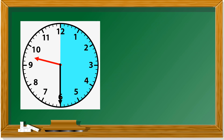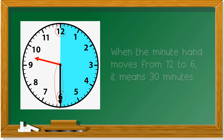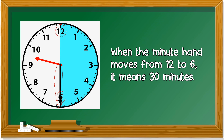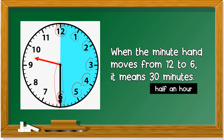Now, the minute hand — this one is the minute hand — it's at six. From twelve to six. When the minute hand moves from twelve to six, it means 30 minutes. Twelve to one is five, ten, fifteen, twenty, twenty-five, thirty. Thirty minutes.